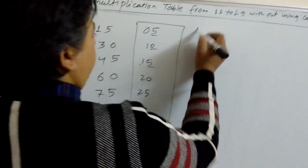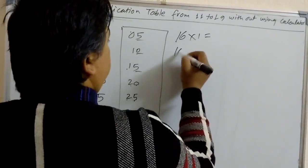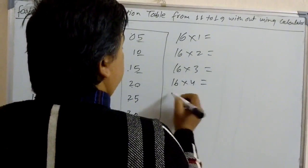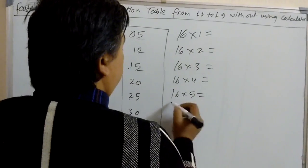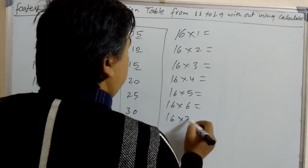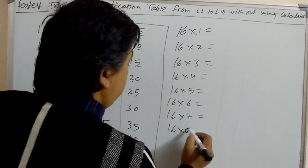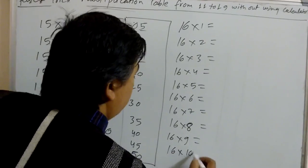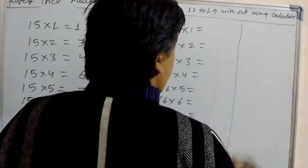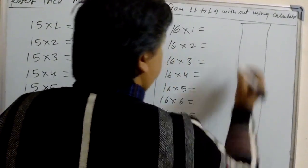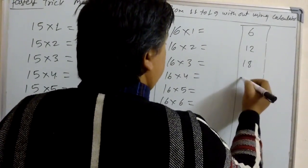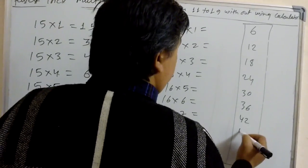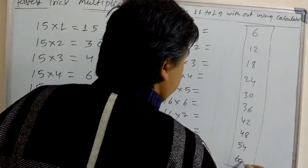Let's do the 16 table: 16×1, 16×2, 16×3, 16×4, 16×5, 16×6, 16×7, 16×8, 16×9, 16×10. For this we have to know the table of 6: 6, 12, 18, 24, 30, 36, 42, 48, 54, 60.